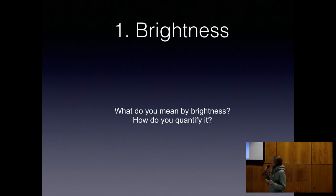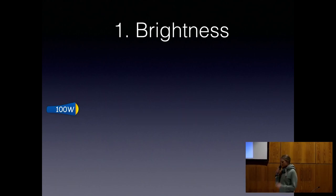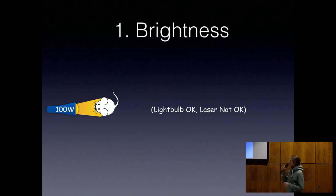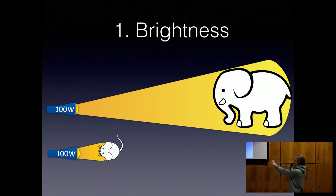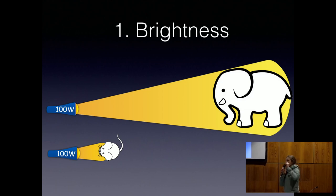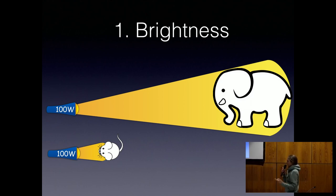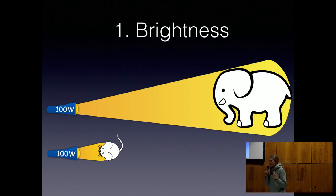So what do I mean by brightness and how do you quantify it? We start with a 100-watt light bulb and you shine it onto a mouse. You do that with a light bulb, not a laser — a 100-watt laser on the mouse is not okay. Then you do the same onto an elephant. With 100 watts on both, the mouse is way closer. The energy per second per square centimeter on the mouse is higher than on the elephant, because the elephant is further away. The brightness on the mouse is higher.